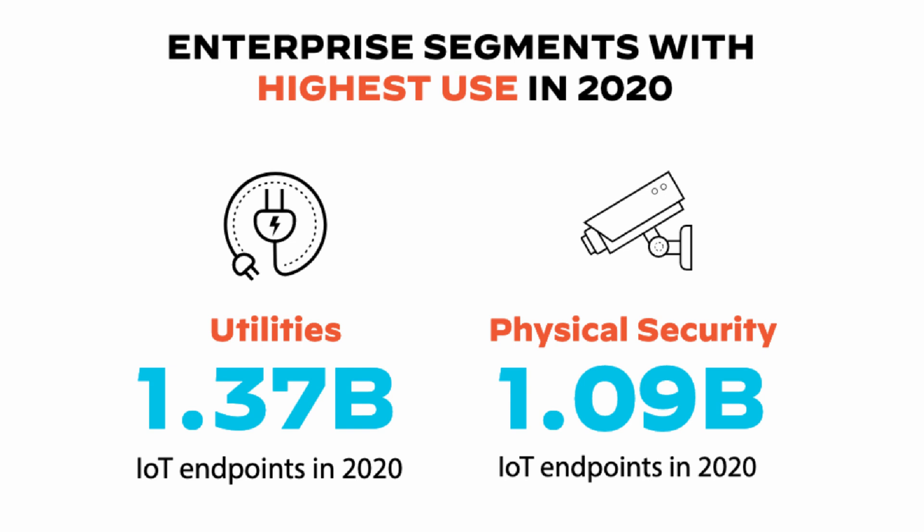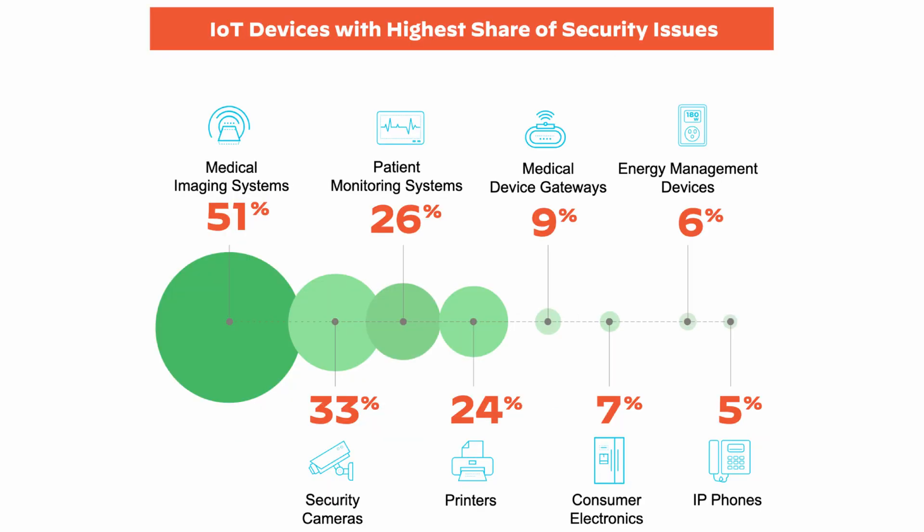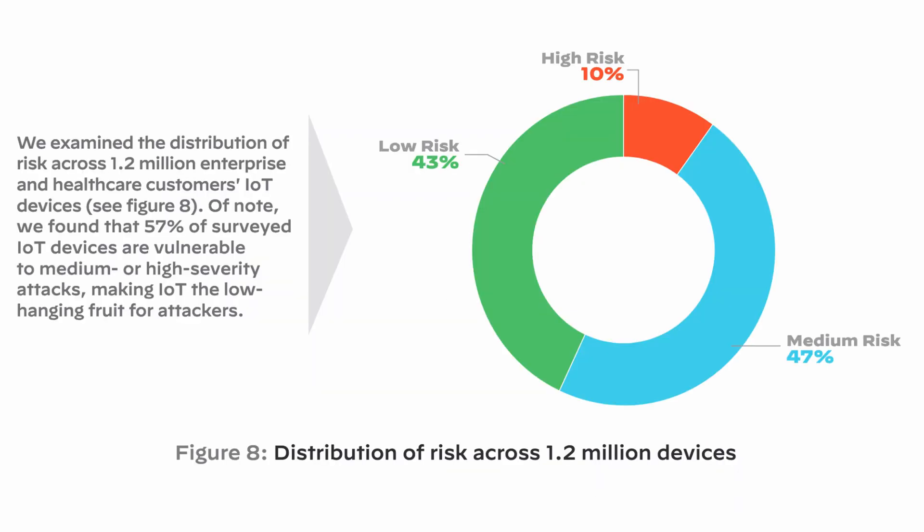According to Palo Alto's Unit 42 team, 30% of devices on enterprise networks today are IoT devices. This can pose a great problem because standard cybersecurity systems lack the ability to recognize specific types of IoT devices, their unique risk profiles, and the expected behaviors associated with them.